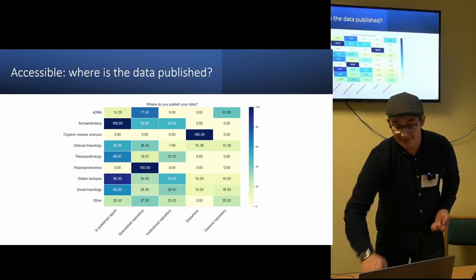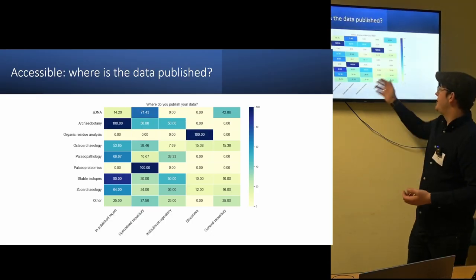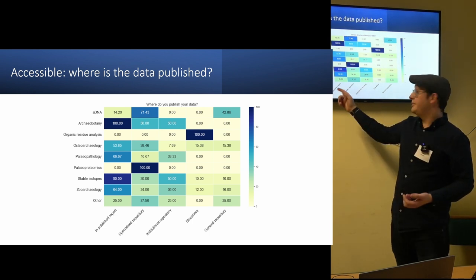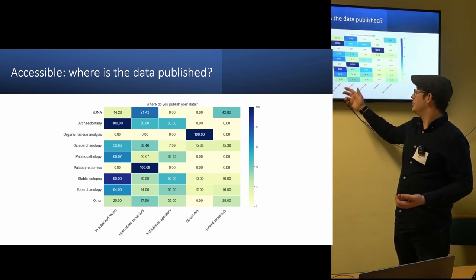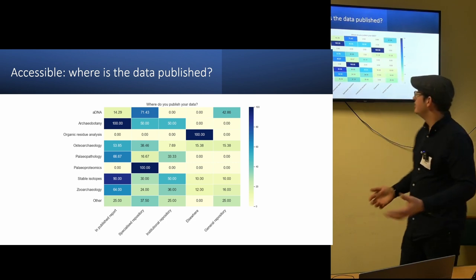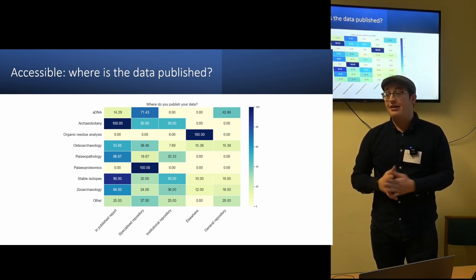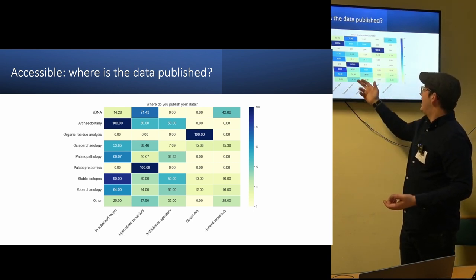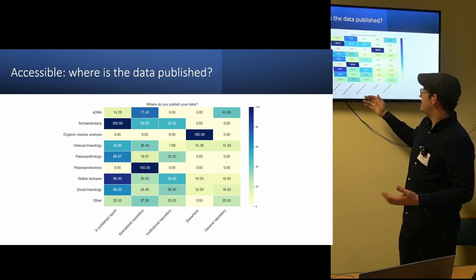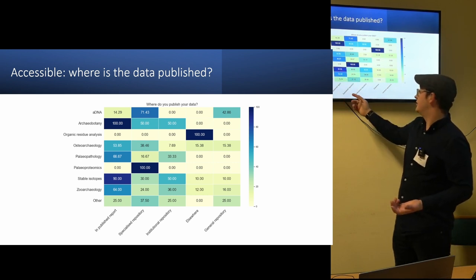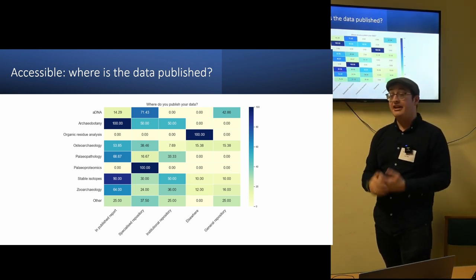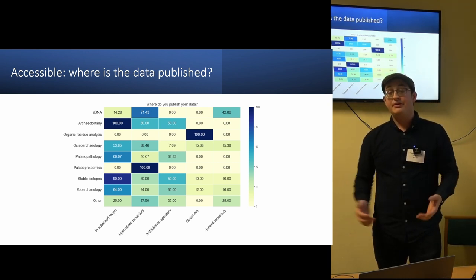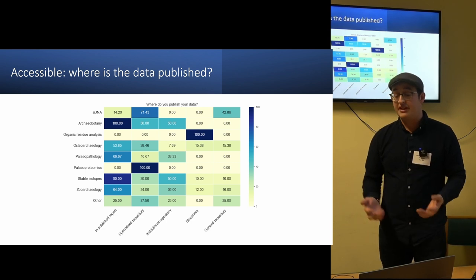In terms of accessibility, you can see where people are publishing the data most. And once again, using the x-axis, you can see that most people are using published report, saving it in a published report, which isn't so good when you consider how you can reuse the data. It's better to be putting it in a repository. And the only field where I'd really say it's doing great is paleoproteomics, so it's in a specialized repository, which is probably IsoArch. So there are specialist databases which exist, but maybe we need to encourage people to deposit more of their data in them.